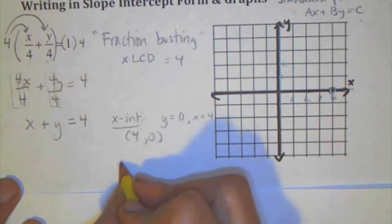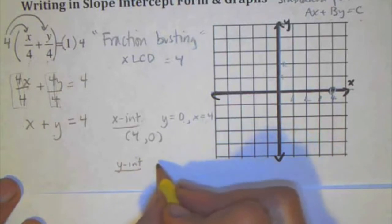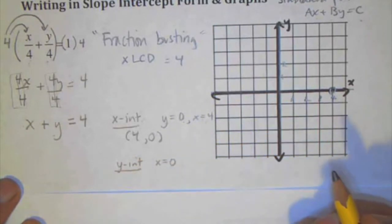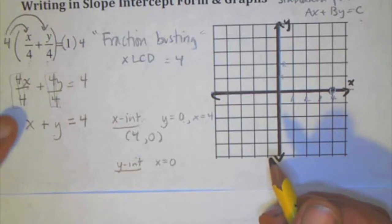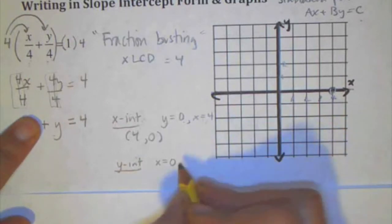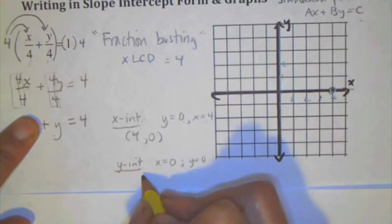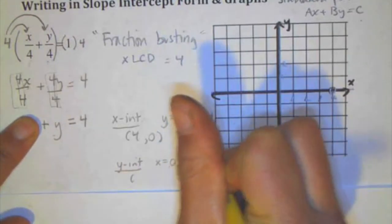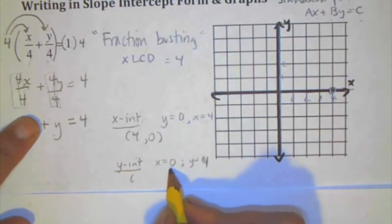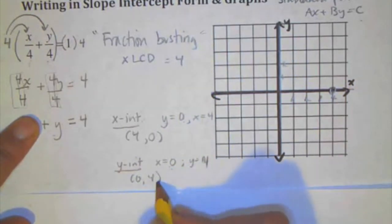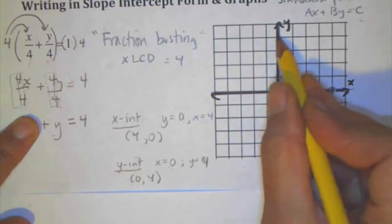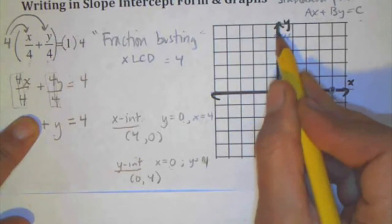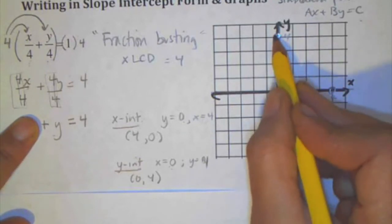Same thing, if I wanted to find the y intercept, I would set x equal to 0. I could do the same type of cover-up method here. So when x is 0, then I get y is equal to 4. And this again being a point, the point, x is 0, y is 4. So that's that point there, that's my y intercept.